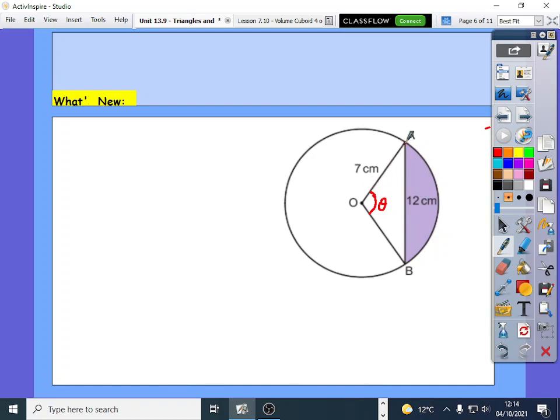Now some of you are thinking how can we work it out? We've been told that the length from A to B is 12. Well, this length here is the radius, so if that's 7, this must also be 7 because that's the radius. Now what you've been given here, which some of you didn't manage to work out unfortunately, you've got 7 centimeters there, you've got 7 centimeters there, and you've got 12 centimeters there, and I need to find this angle. Now that's your typical cosine rule.